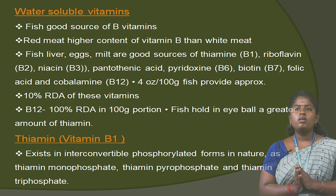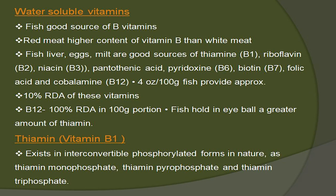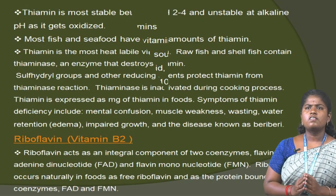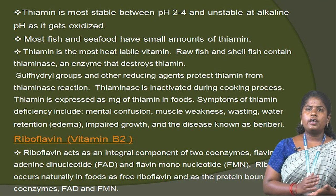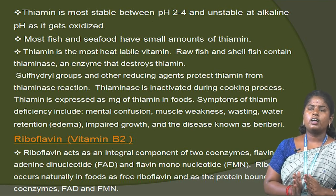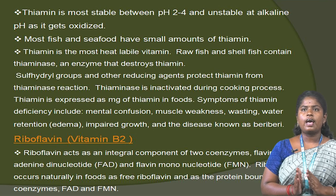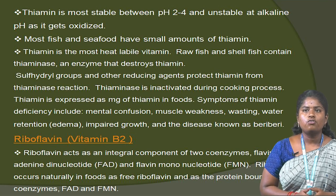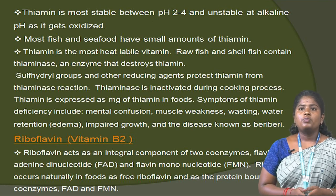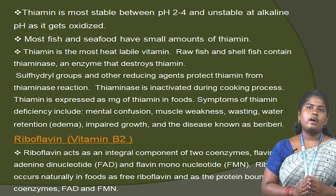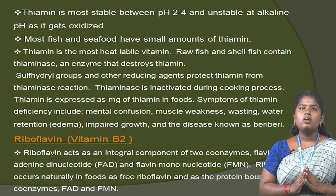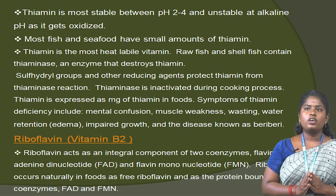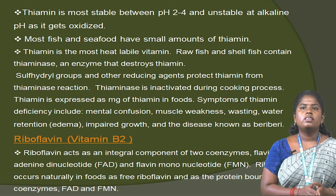Thiamine exists in several interconvertible phosphorylated forms in nature: thiamine monophosphate, thiamine pyrophosphate and thiamine triphosphate. Thiamine is most stable between pH 2 to 4 and is unstable at alkaline pH and gets oxidized. Most fish and seafood have a small amount of thiamine. Thiamine is the most heat-labile vitamin. Raw fish and shellfish contain thiaminase, an enzyme that destroys thiamine. Sulfhydryl groups and other reducing agents protect thiamine from the thiaminase reaction.